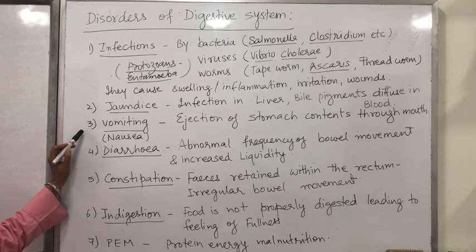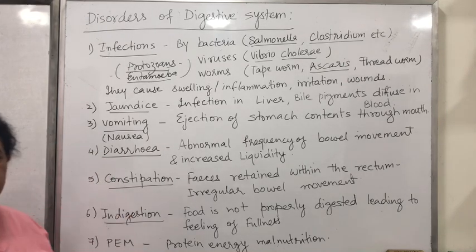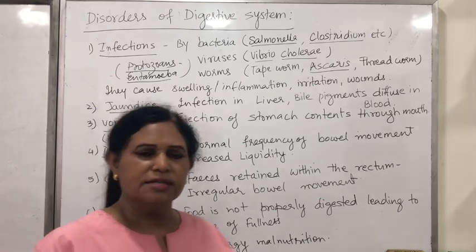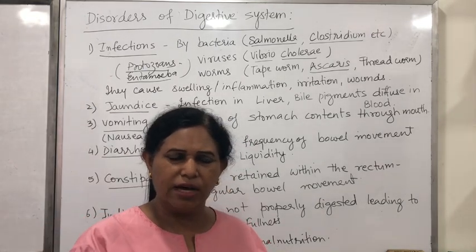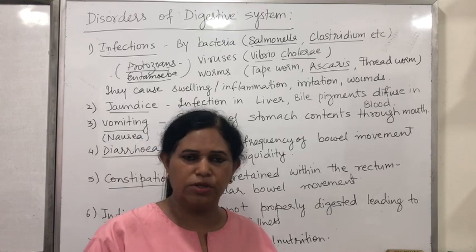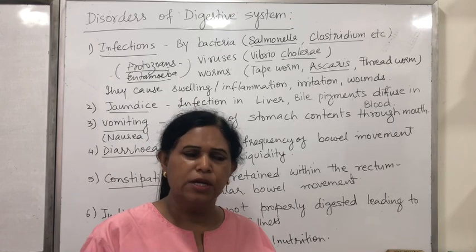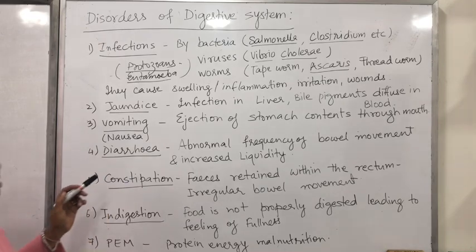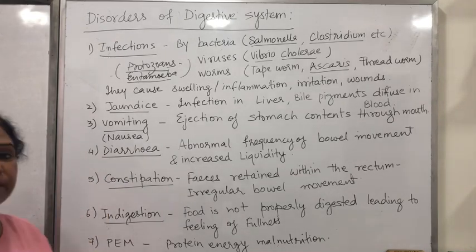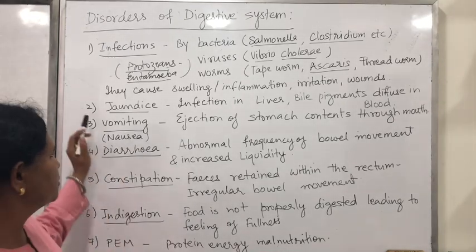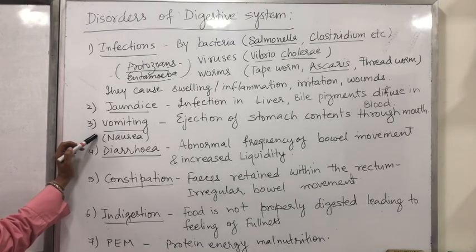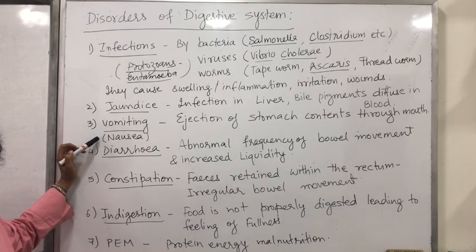Then there is a problem called vomiting. This is the ejection of the stomach contents through the mouth and is a reflex action. If your stomach is getting irritated, or you have some unwanted things in your stomach, or you are overeating, the contents will move out through your mouth — this is because of reverse peristalsis. This is called vomiting and is preceded by nausea, which means the feeling of vomiting.